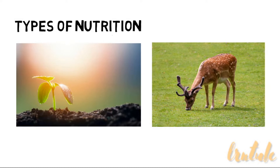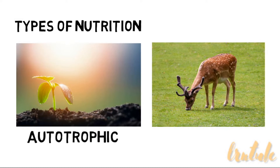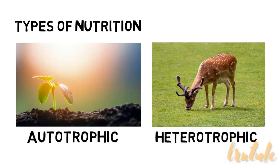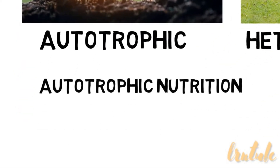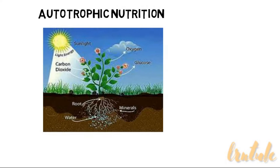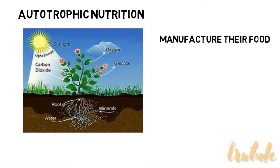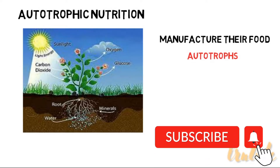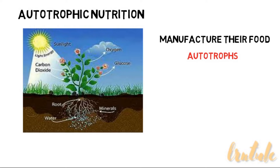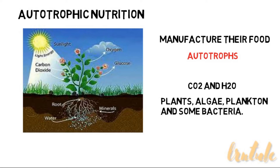There are two types of nutrition: autotrophic and heterotrophic nutrition. In autotrophic nutrition, organisms are able to manufacture their food. These organisms are called autotrophs, or sometimes they are called producers. These organisms produce food from inorganic raw materials like carbon dioxide and water that are present in the surrounding. Examples of autotrophs include plants, algae, plankton, and some bacteria.